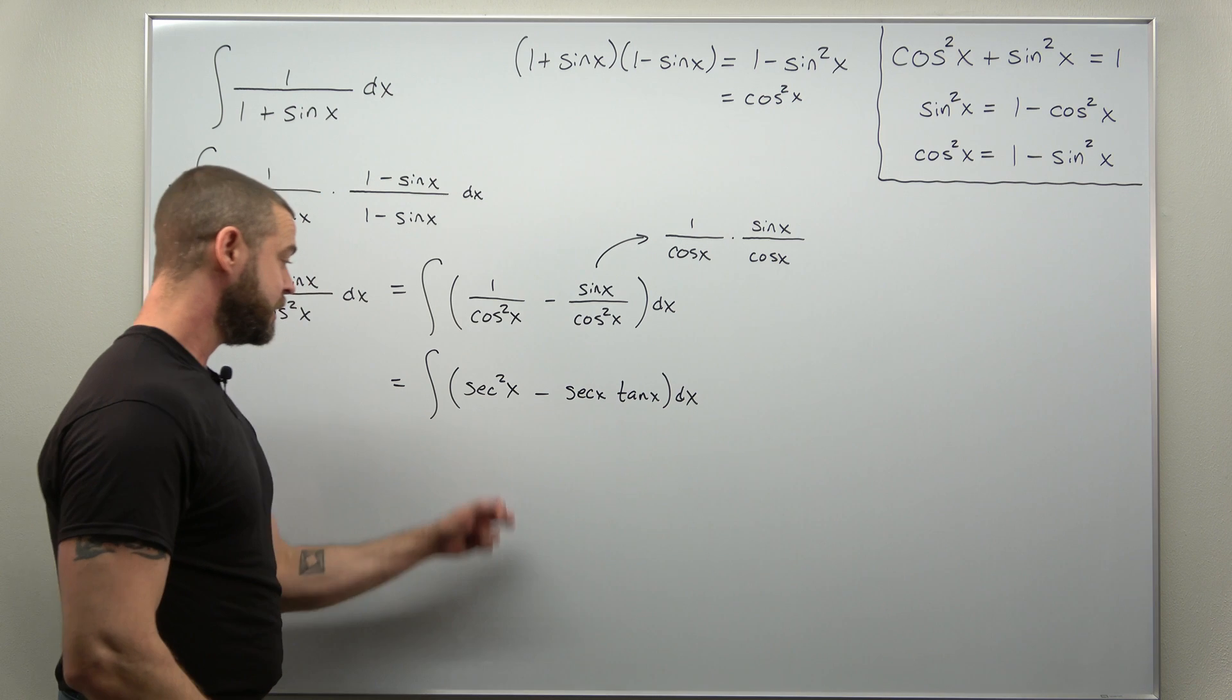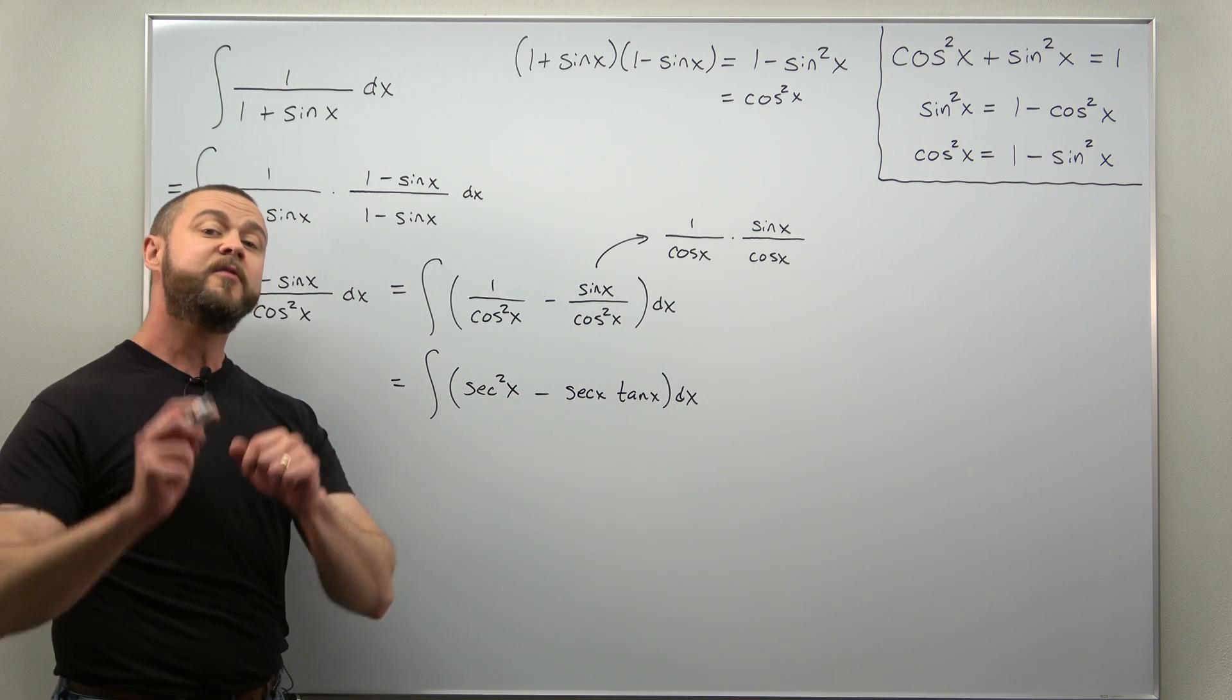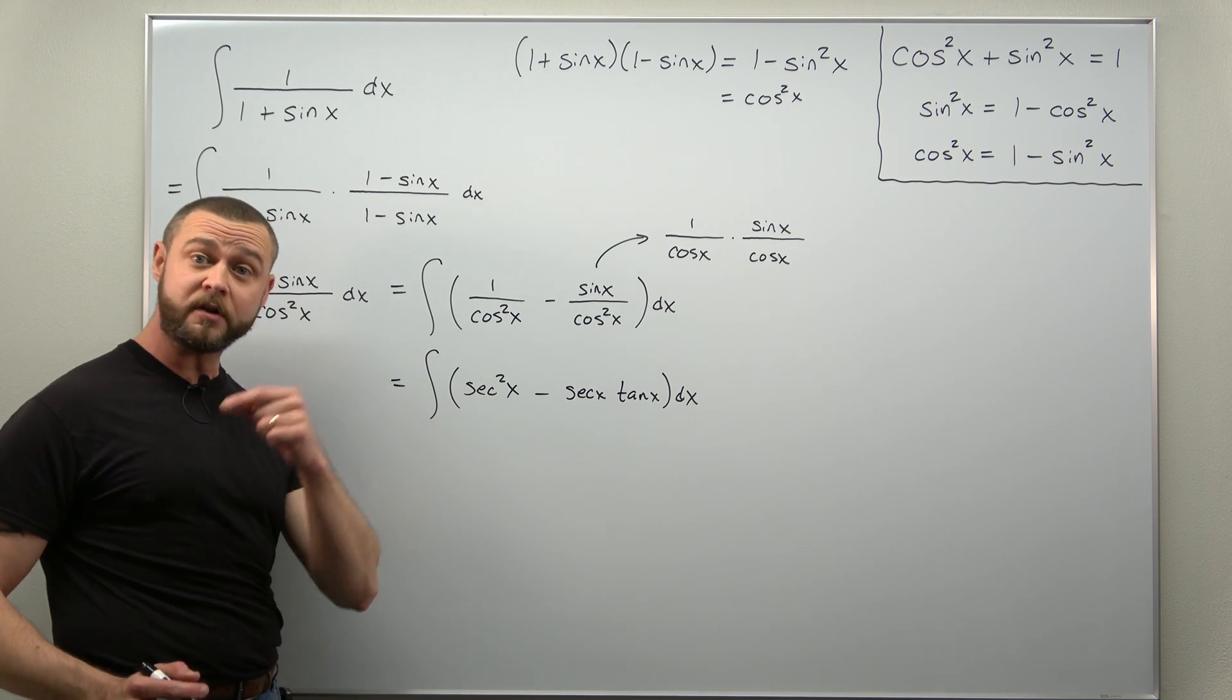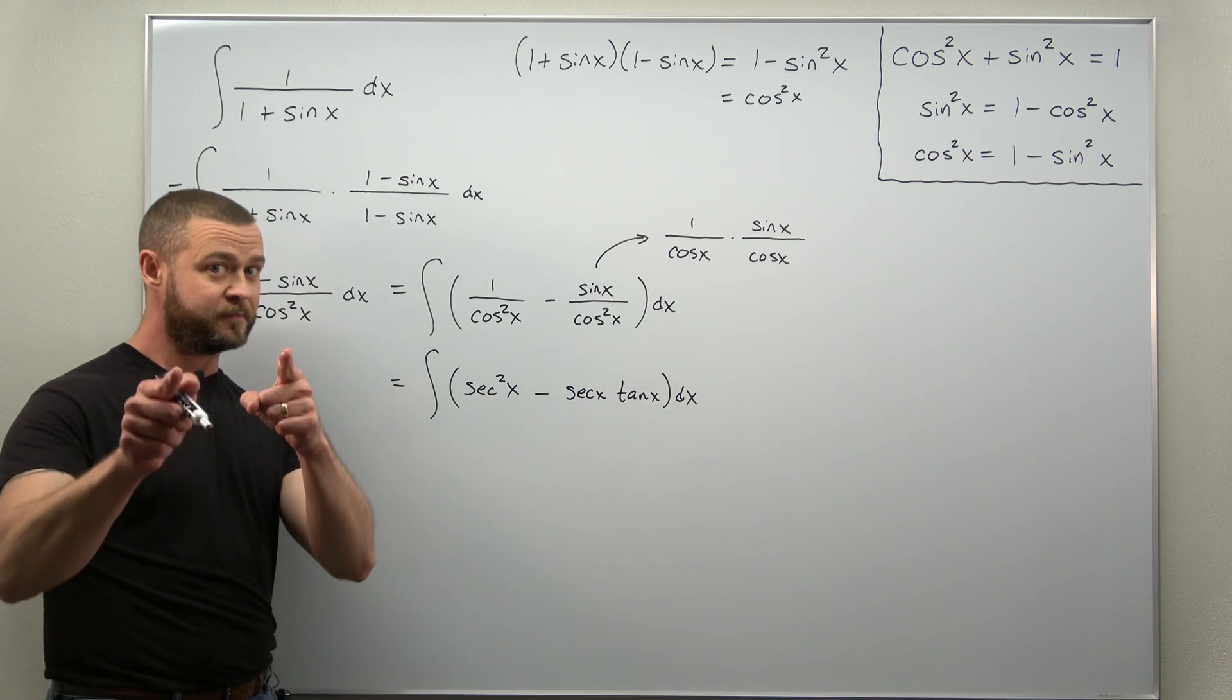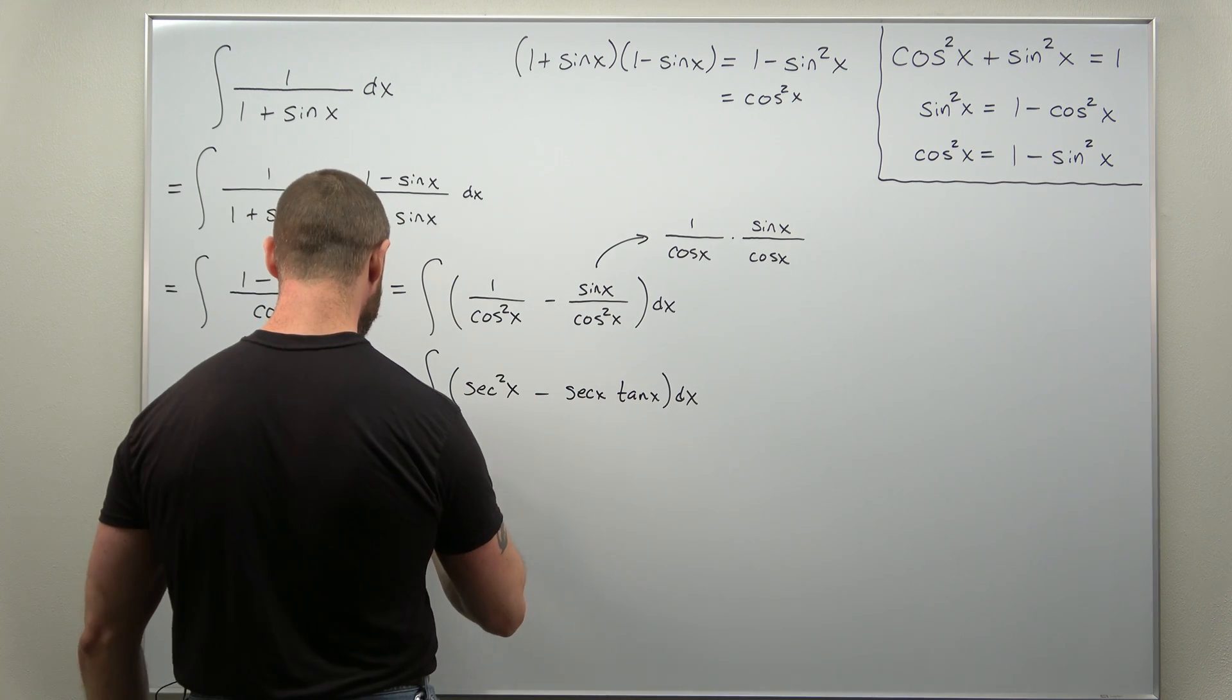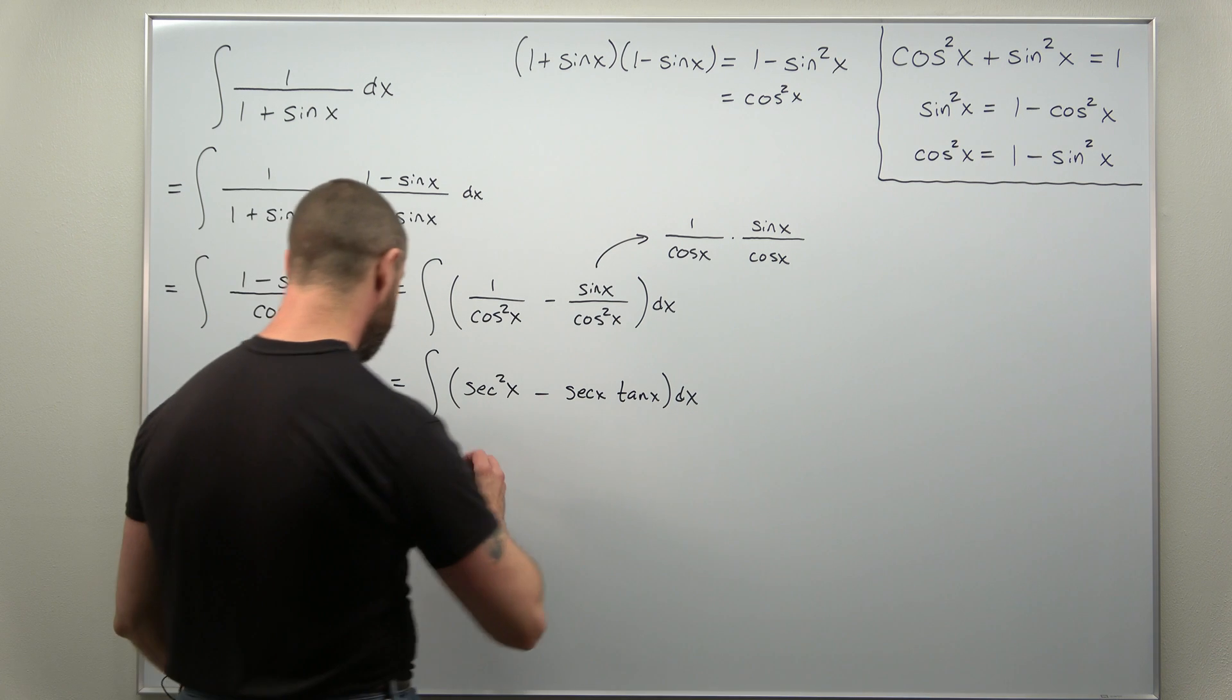And at this point each of those terms has a basic antiderivative. You've probably learned these back in your Calc 1 course. That's probably the first place you learned this. What trig function differentiates to secant squared? You know it. That comes out to tangent. So here the antiderivative of secant squared x is going to be tangent x.